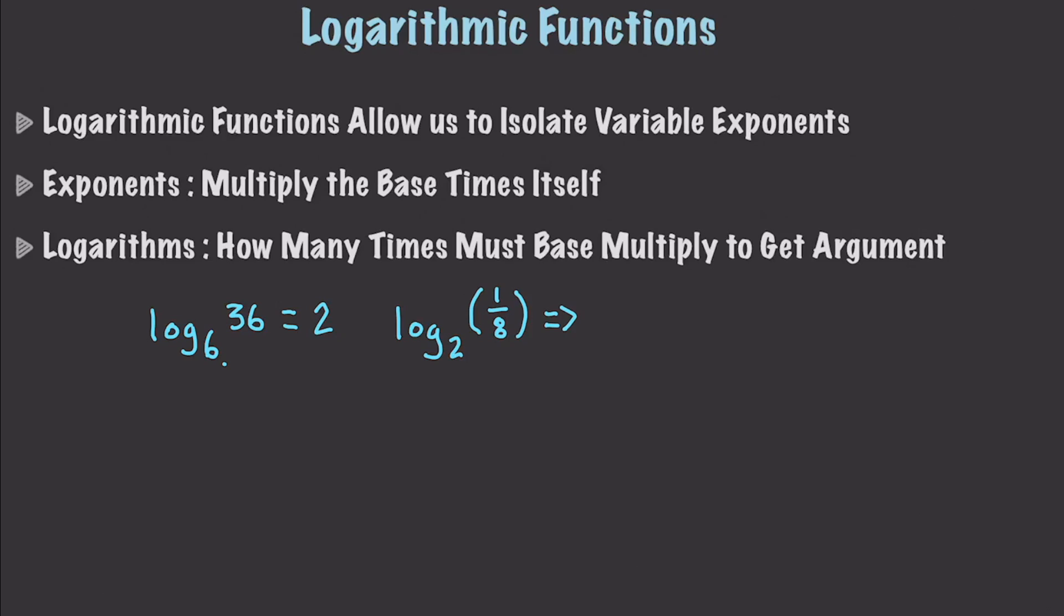Well, basically, our 1 eighth is going to be transformed into 1 over 2 to the 3rd, which translates into 2 to the negative 3rd. And so, the base 2 log of 1 eighth is ultimately going to be equal to negative 3. Okay? Very simple. Basically, this guy went right there, they cancel out, and all we have is negative 3 left.